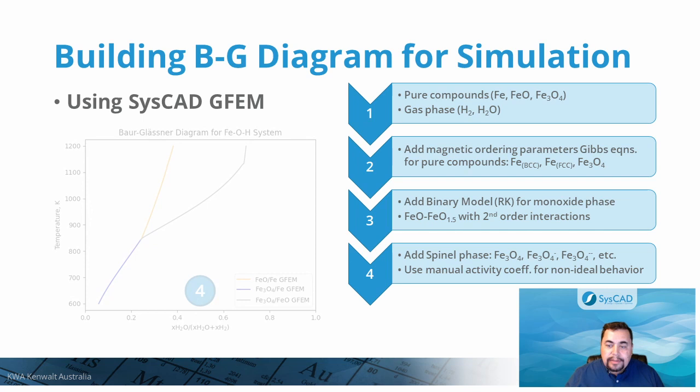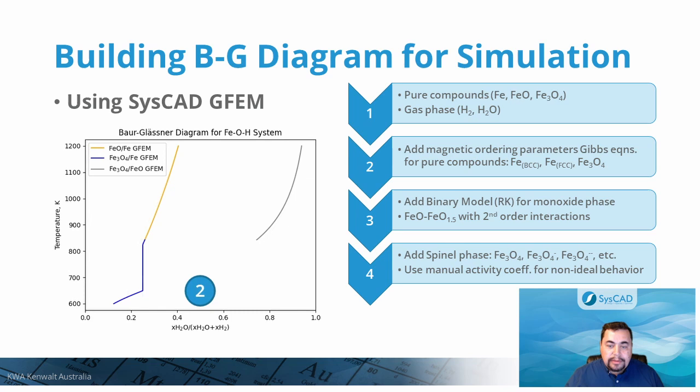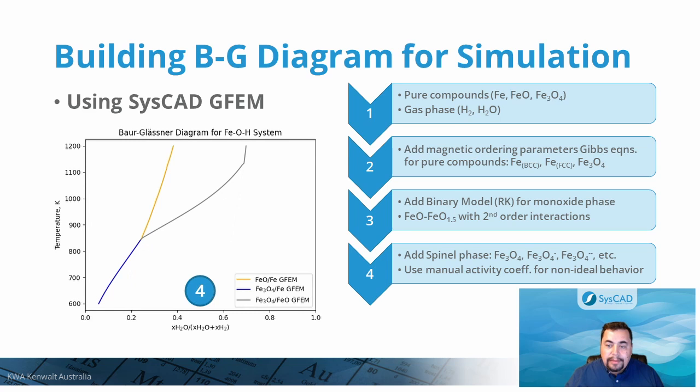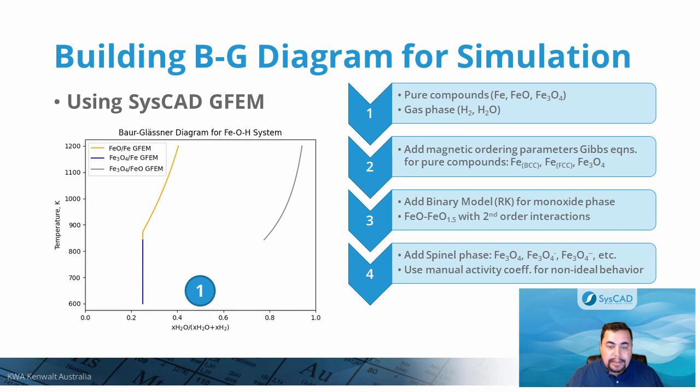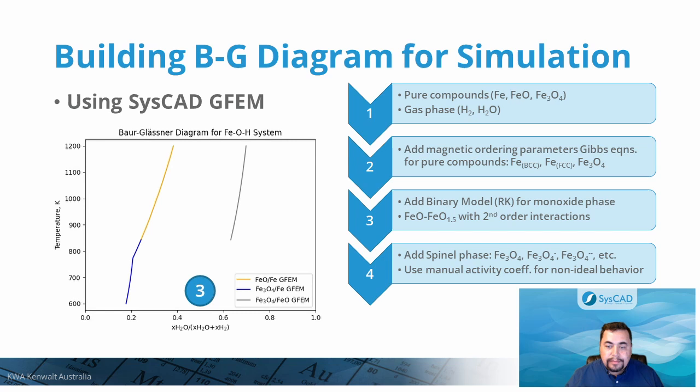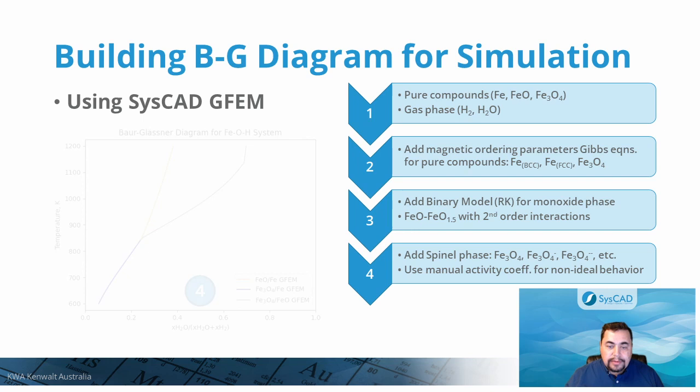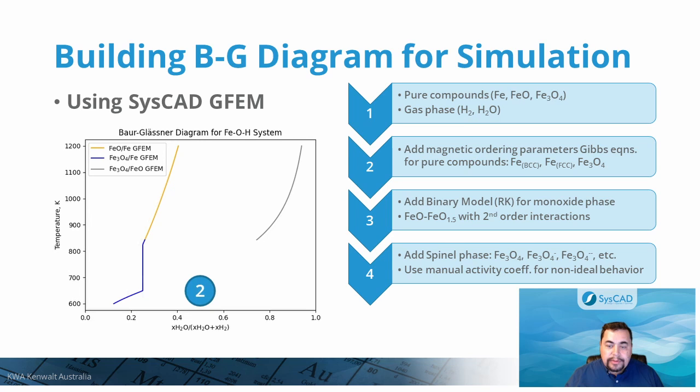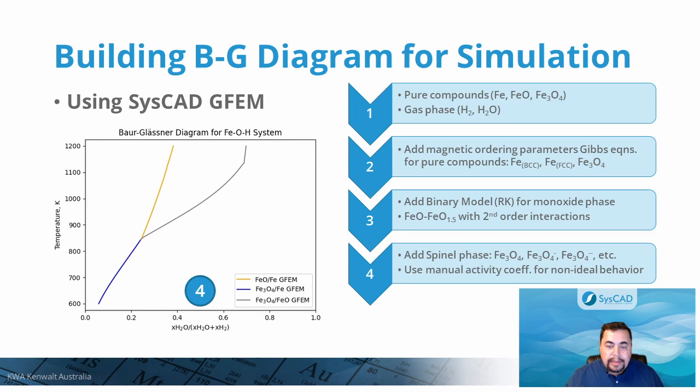As shown in step 3 in the animation, this improved the results for the iron oxide-iron boundary line, but the two boundaries considering magnetite still needed improvement. Finally, magnetite was converted into a spinel phase with four end-members. We then manually adjusted the activity coefficients of the spinel phase — fixed values independent of temperature — to best match the expected results as shown in step 4. This model was then used in the Gibbs free energy minimizer reactor for the shaft furnace.